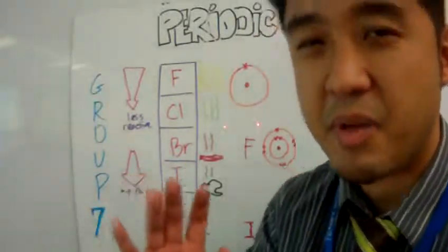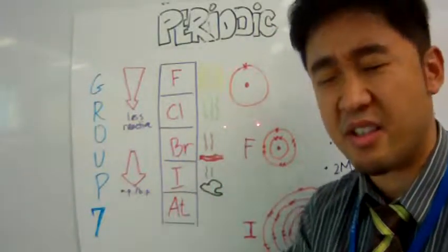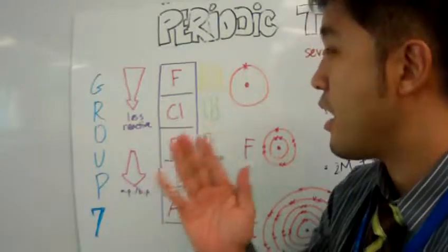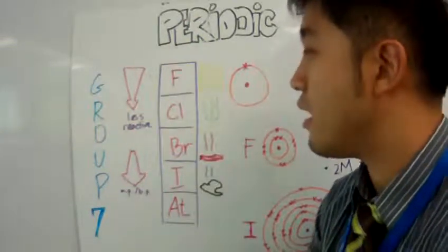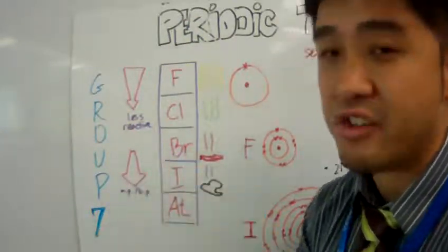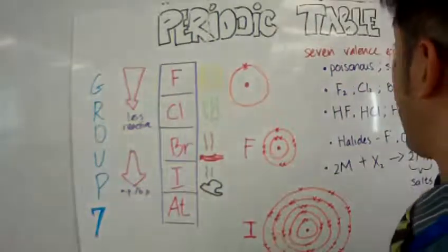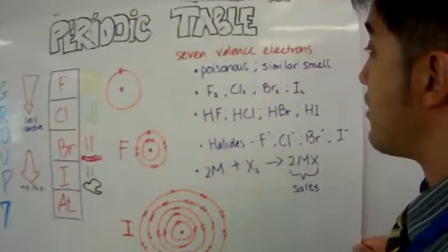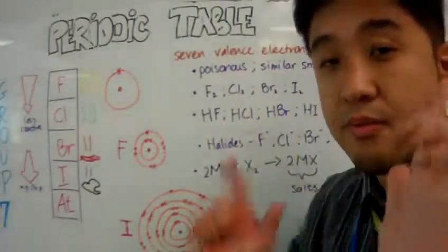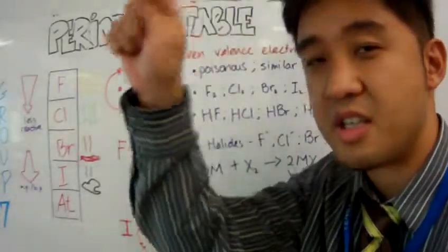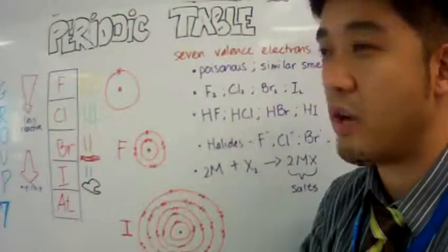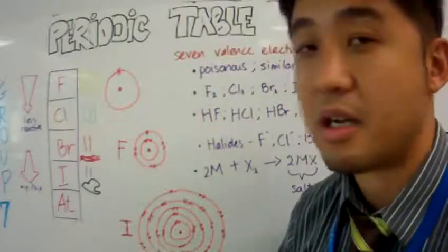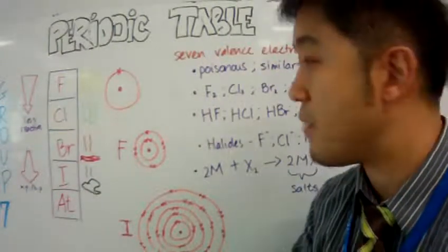Alright, the periodic table's Group 7 - that's what we're going to do today. The Group 7 elements are basically halogens. Now halogens have seven valence electrons in the outer shell or energy level.